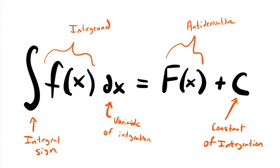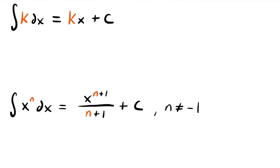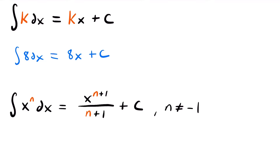Now we're ready to look at the basic rules of integration. Just like we have rules for differentiation, we have rules for integration that make finding antiderivatives much easier. Our first rule: the integral of some constant k dx is equal to k times x plus C. For example, the integral of 8 dx equals 8x plus C — the constant multiplied by the variable we're integrating with respect to, plus C.